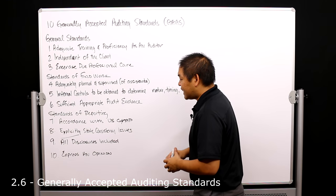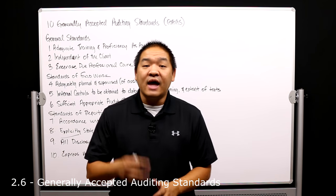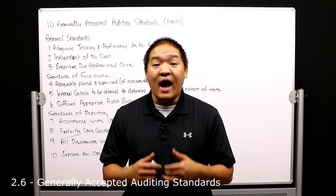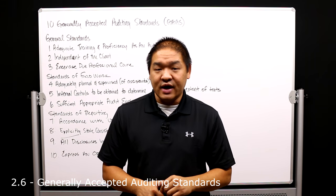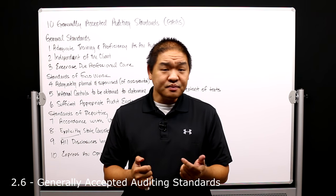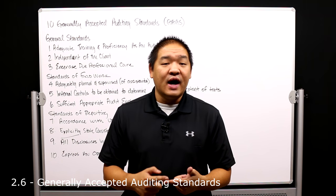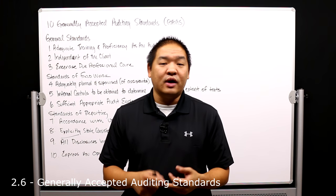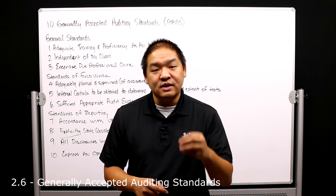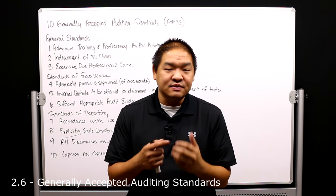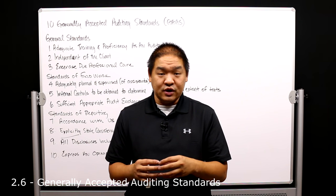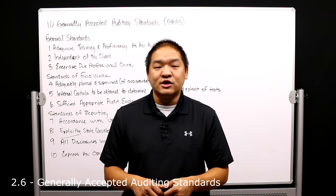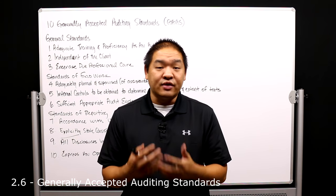Number nine: all disclosures are included. Any disclosures that should be included are properly included in the financial statements or notes, as required by auditing standards. For example, if there should be a disclosure on how revenue is recognized or how depreciation of equipment is calculated, that disclosure must be included. There are times when a company may not want to include a disclosure, and as the auditor, if we know it's missing, we must push the client to include it — otherwise we may issue a qualified or adverse opinion.